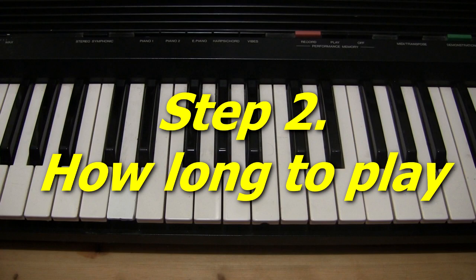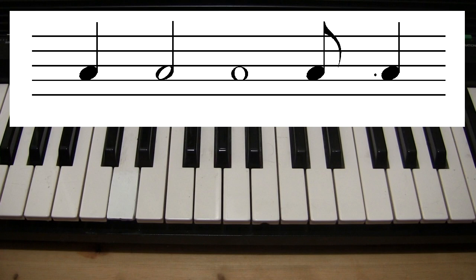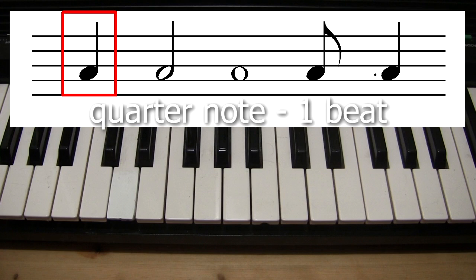The second step to learning how to read the music is to know how long to play each note for. And that's why the notes come in a variety of different shapes. Here are the ones you'll mostly encounter. The one that's a black circle with a line is called a quarter note. Play that one for one beat. Let's say a beat is this long.